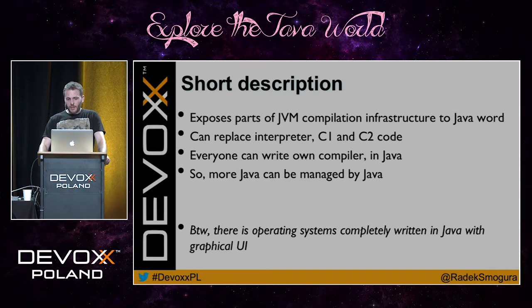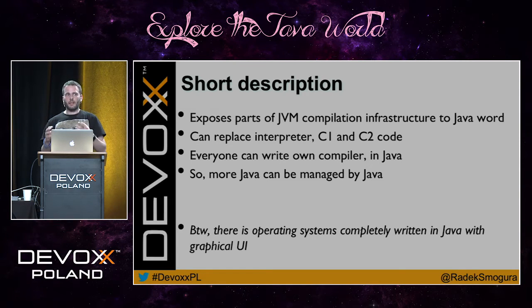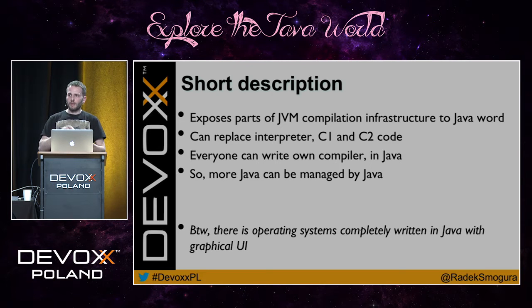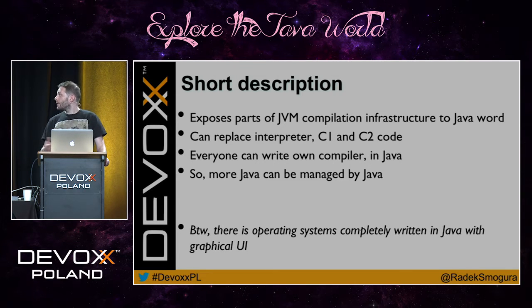So what does JDK VMCI do? Firstly, it exposes the infrastructure of the virtual machine to the Java world. It's not the integration with a Java compiler, but an interface for compilers. This means that you can create your own compiler and plug it into the Java world. A good example is Project Graal. You can replace C1 and C2, you can create your own code — maybe something better, maybe something different.